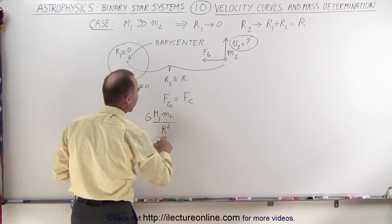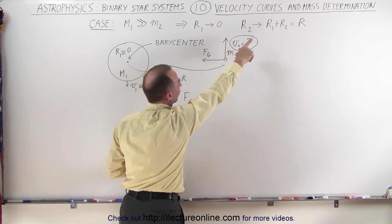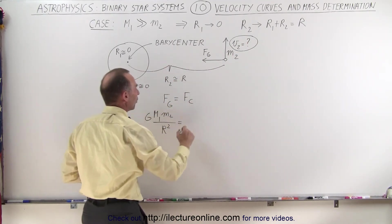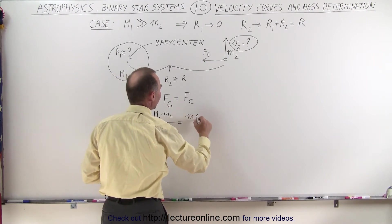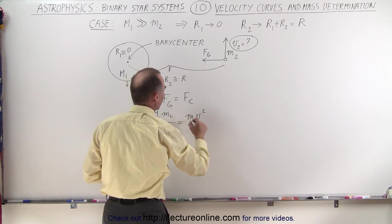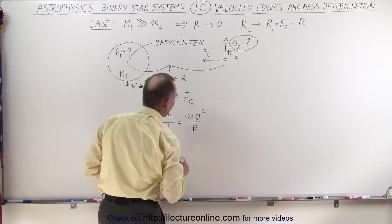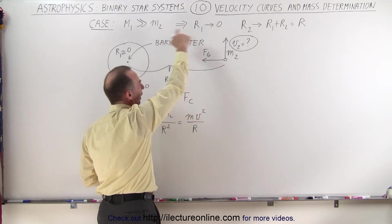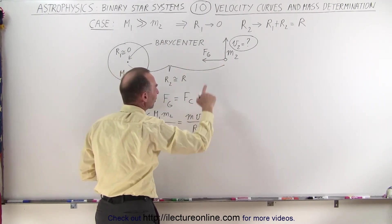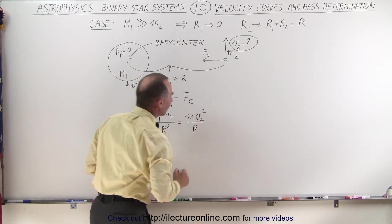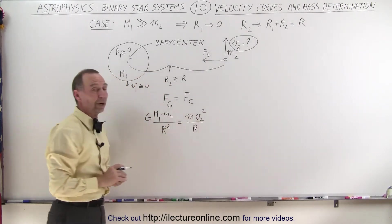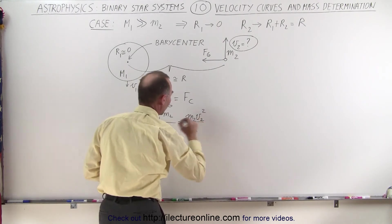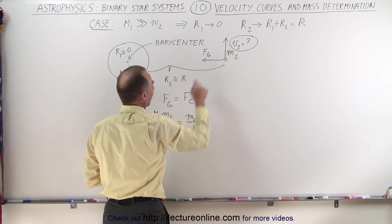Newton's law of gravity tells us that we have G times m1 times m2 divided by r squared — which is r2 in this case — and that equals the centripetal force, which is m times v squared over r. That's the same r because it's the radius of the moving object, and the velocity would be v2 squared. This is also m2 because it's the mass of the small object.